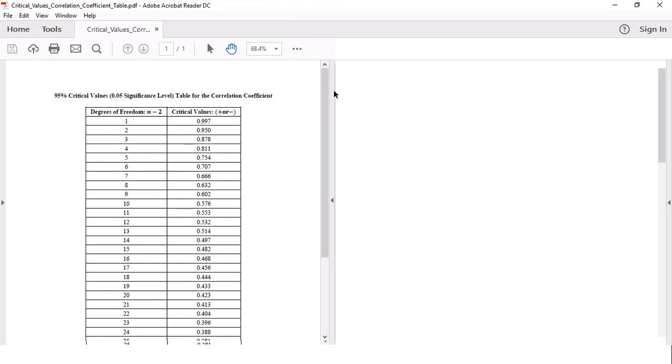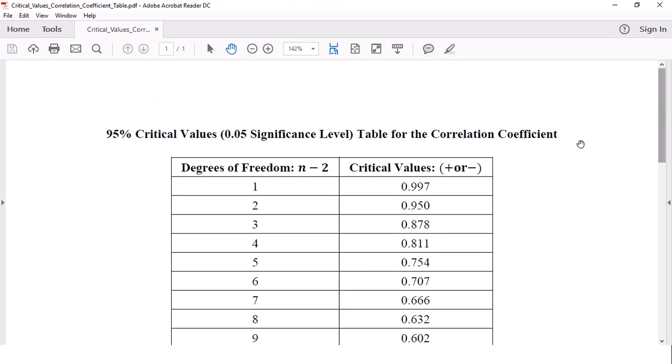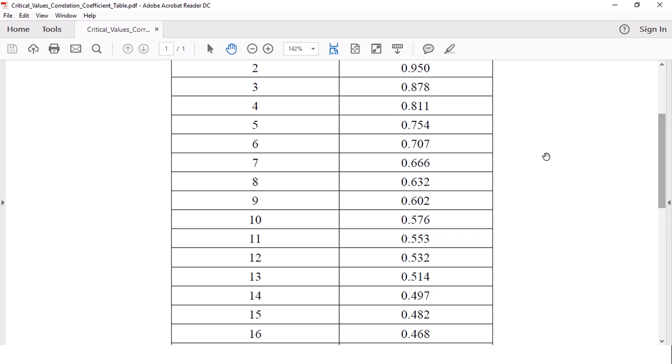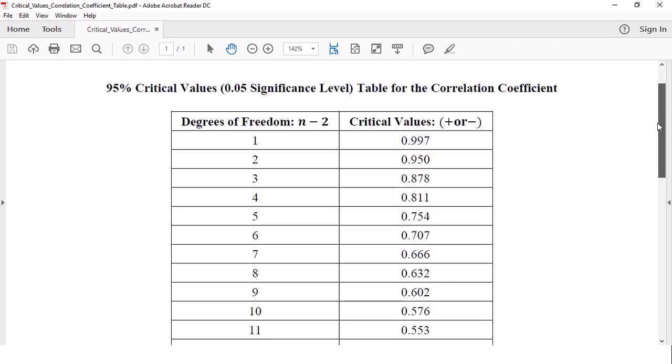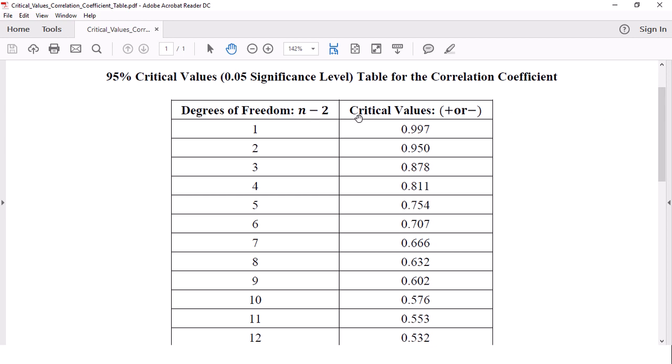This is always for a 0.05 significance level. You'll never have anything different than that. You go down to your degrees of freedom and we look at 11. So the critical value when your degrees of freedom are 11 would be 0.553. Once again, degrees of freedom is sample size minus 2.